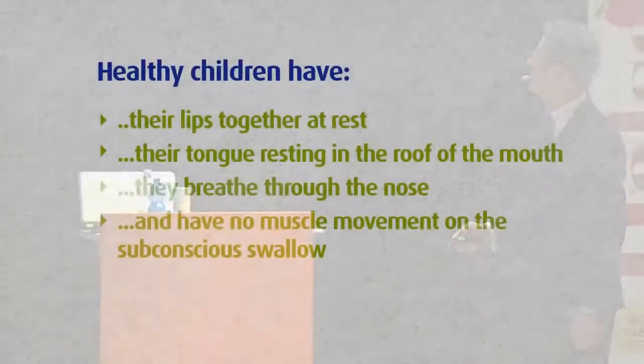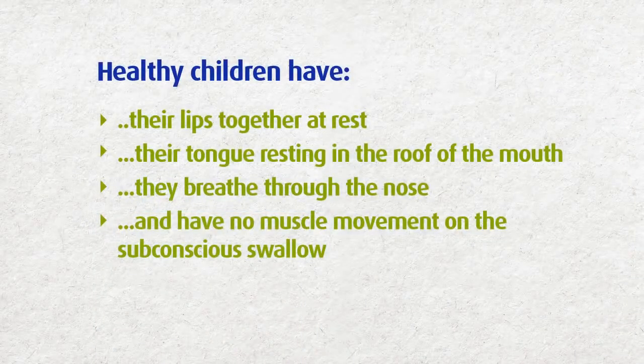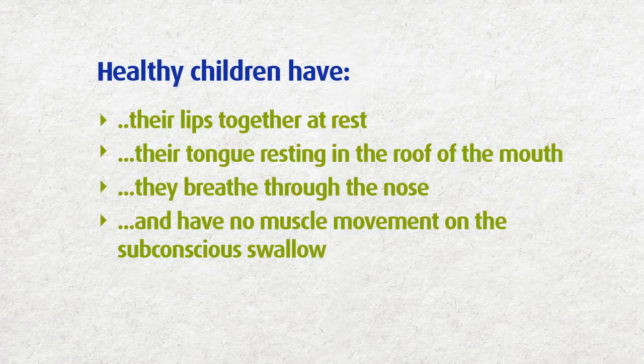If children want to have healthy development, they need these four patterns: lips together at rest, tongue in the roof of the mouth, breathing through the nose, and no muscle movement on the subconscious swallow. If they grow up with those patterns, they will have straight teeth. If they're missing any of those patterns, they won't have straight teeth.